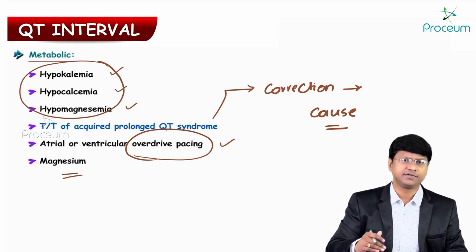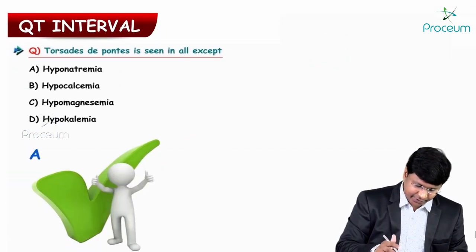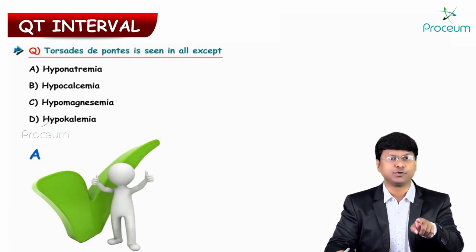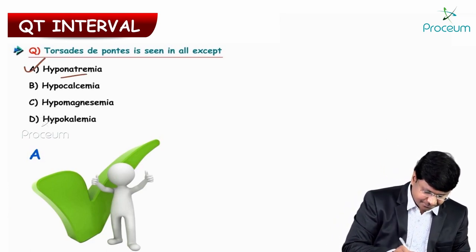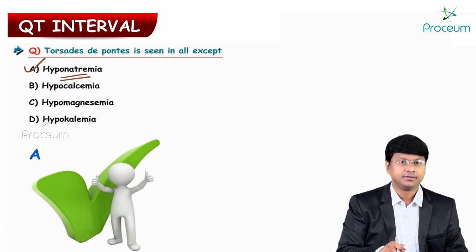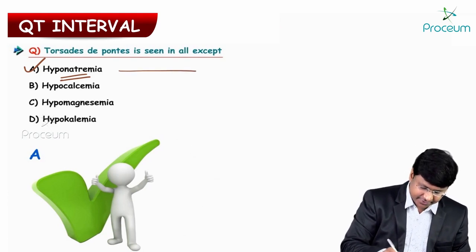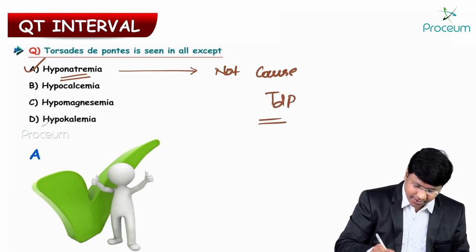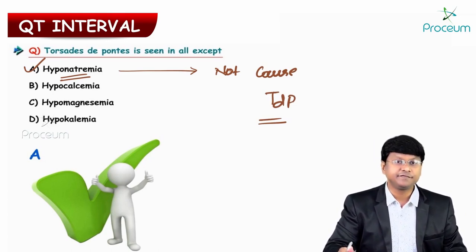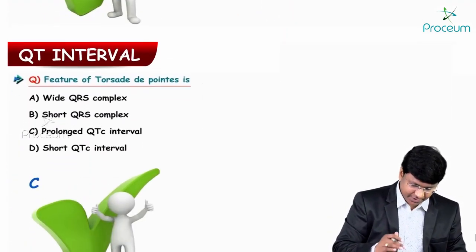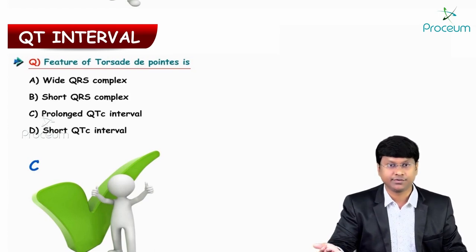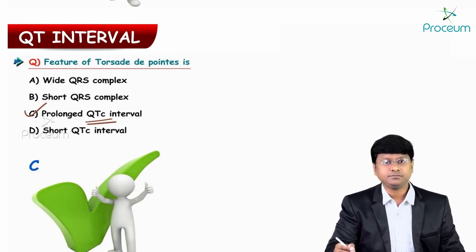Now for some practice questions: Torsades de pointes is seen in all of the following except — hyponatremia, hypocalcemia, hypomagnesemia, hypokalemia. All hypo-electrolyte states except hyponatremia will cause torsades de pointes. Hyponatremia will not cause torsades de pointes. Regarding features of torsades de pointes — the answer is prolonged QT interval, not wide or short QRS complex or short QT interval.